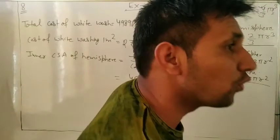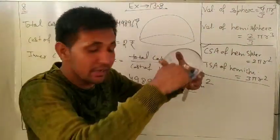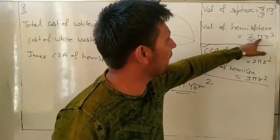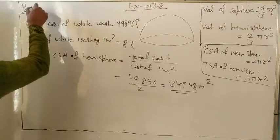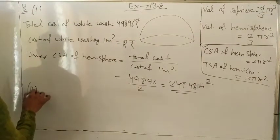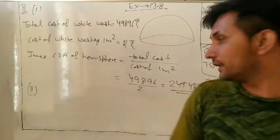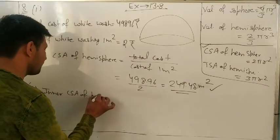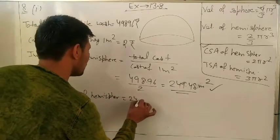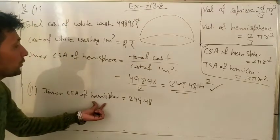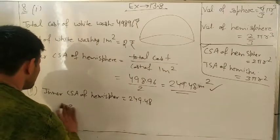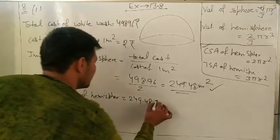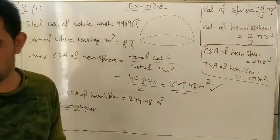In the second part, we need to find the volume of air inside the dome. Volume of hemisphere = (2/3)πr³, so we need r. We already know the inner CSA is 249.48 m², and CSA of hemisphere = 2πr², so: 2πr² = 249.48.